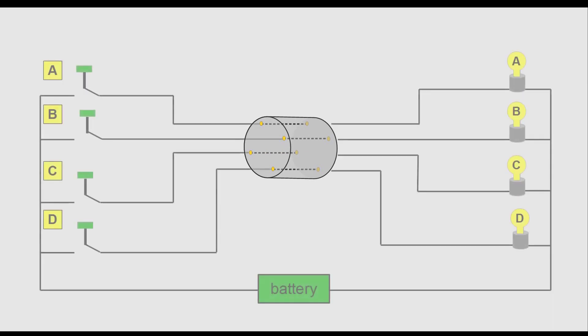Now we are adding the first rotor. The rotor has contacts on two sides that are connected by wire. If the wires would go straight through the rotor, pressing key A would still light up light bulb A.